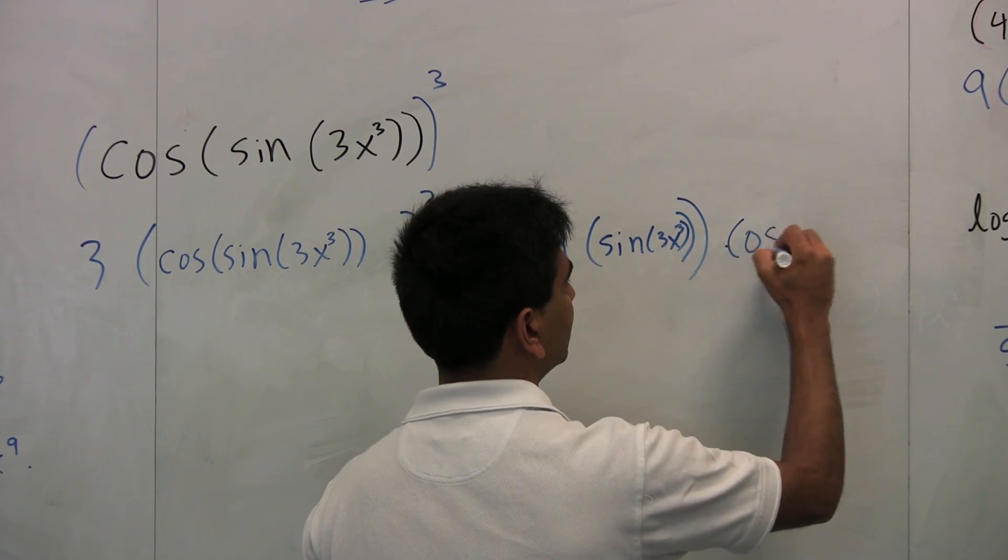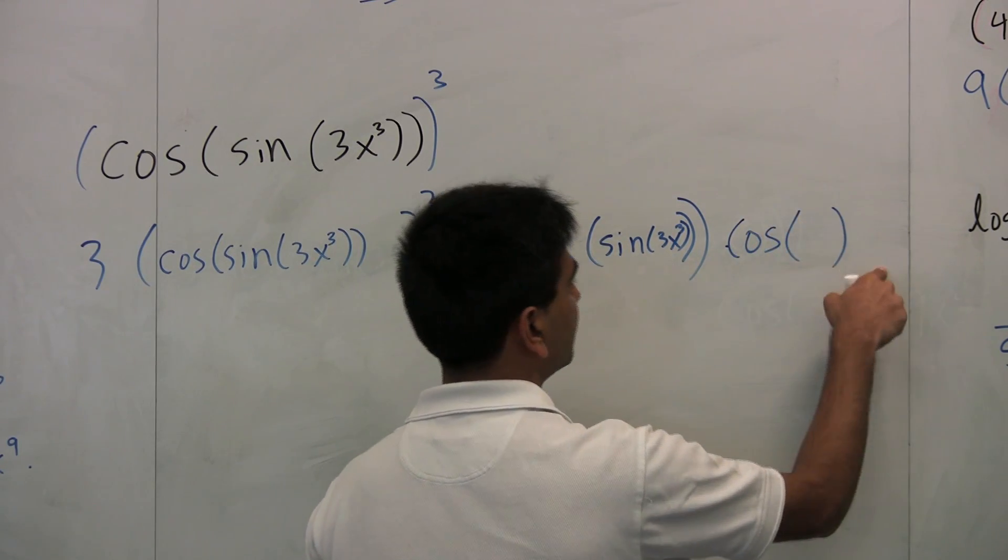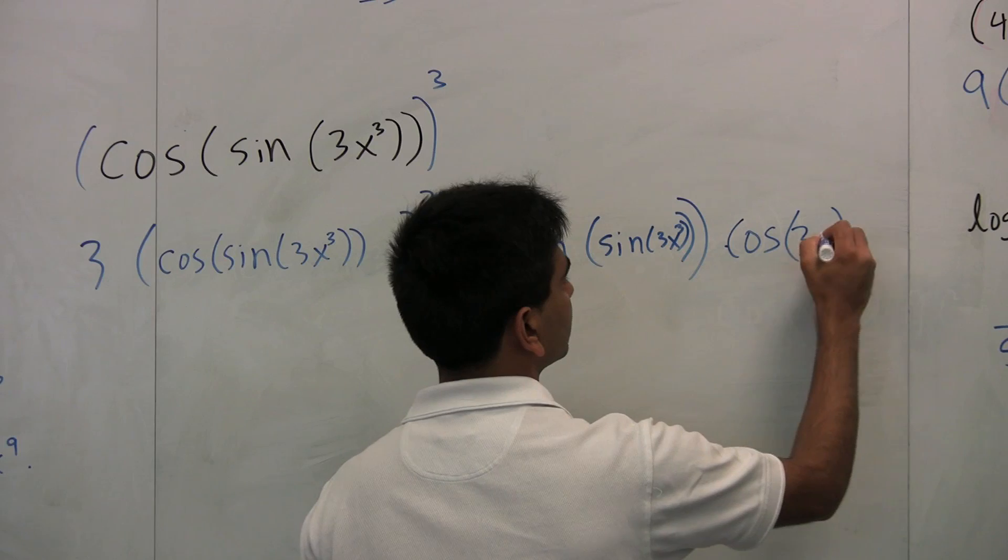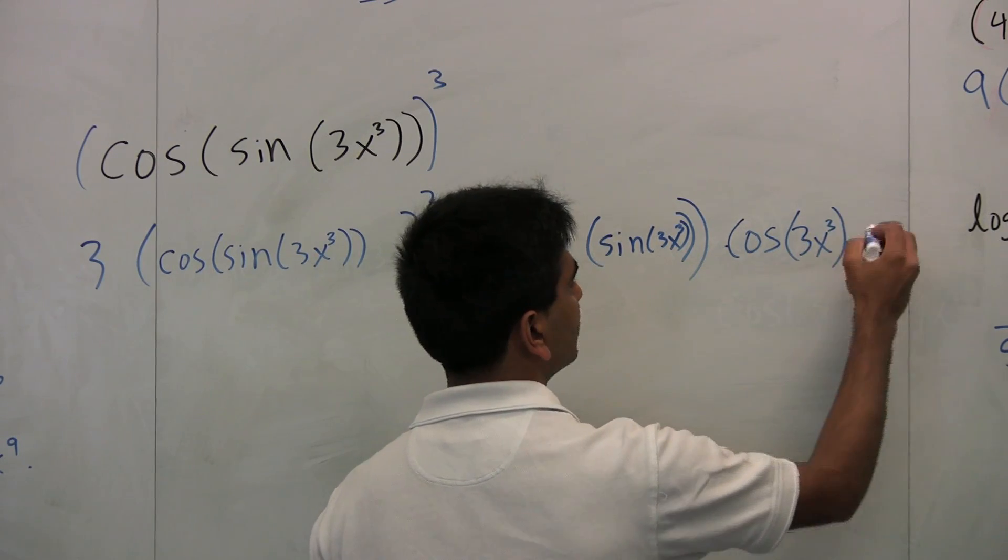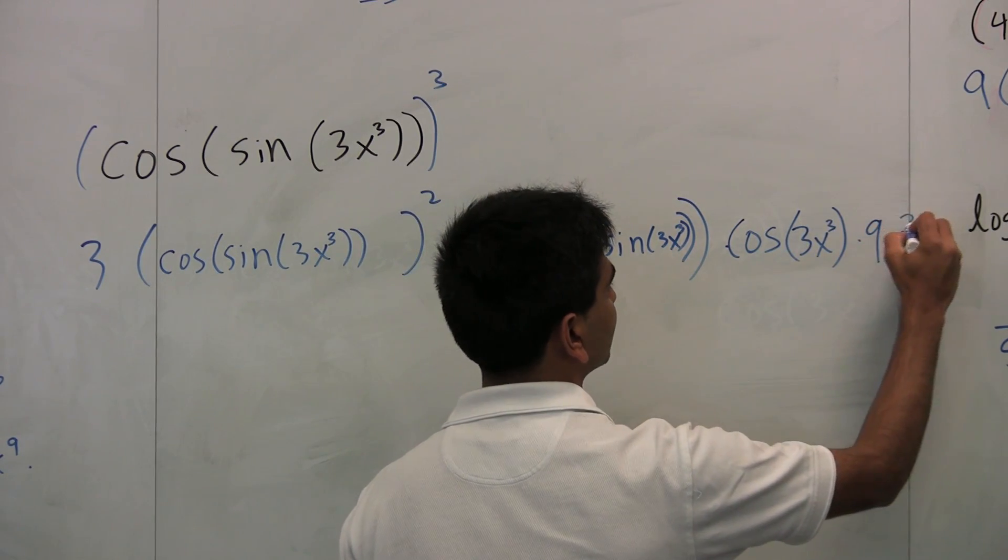So cosine of whatever is in there, times its derivative. So 3x³, times 9x², because that's the derivative of the inside function.